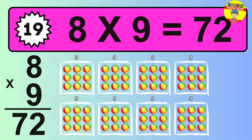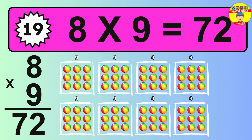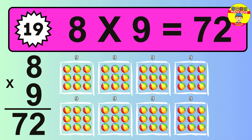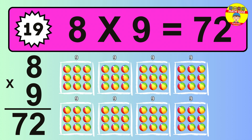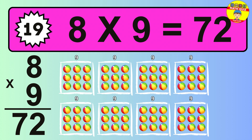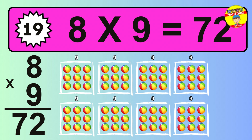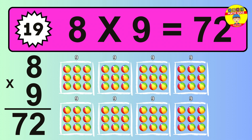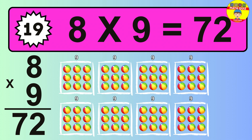The answer is 8 times 9 is 72. To calculate, we have 8 groups with 9 balls each one. So, how many balls do we have? 72 balls.